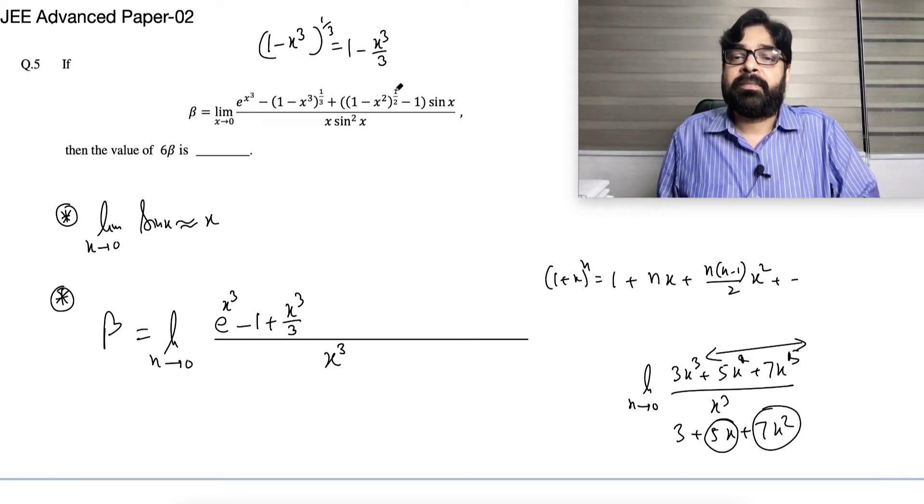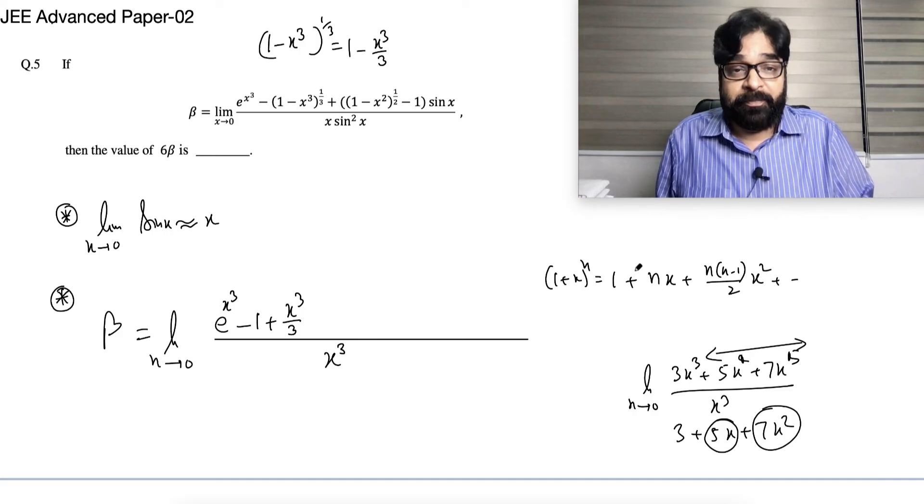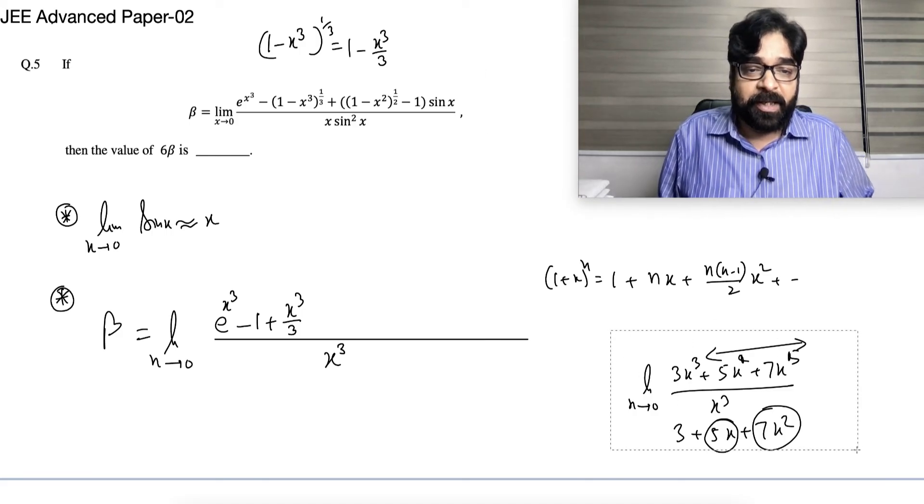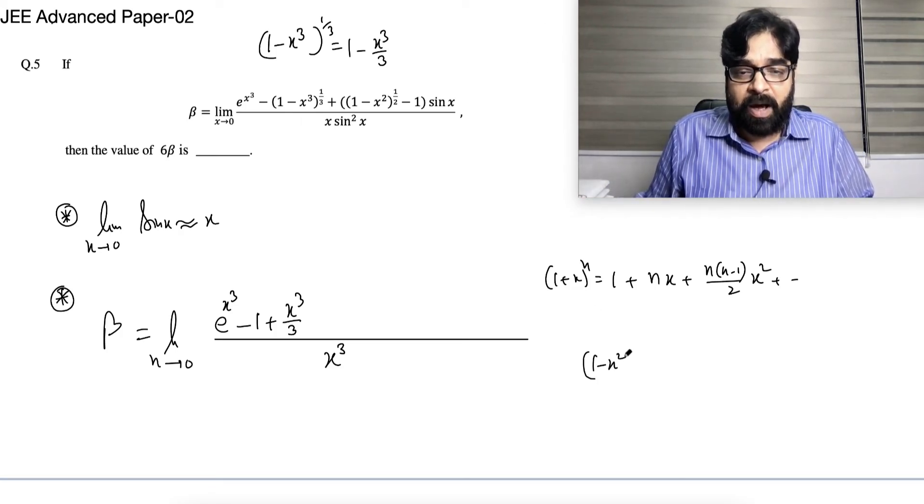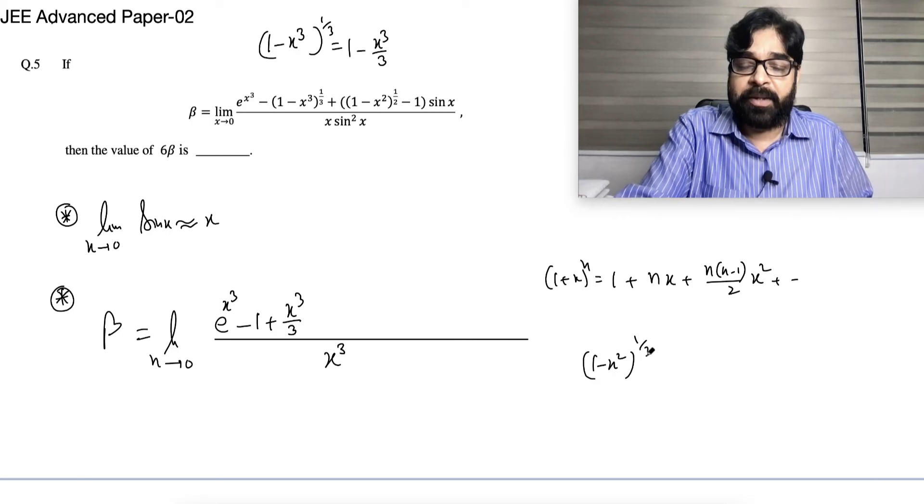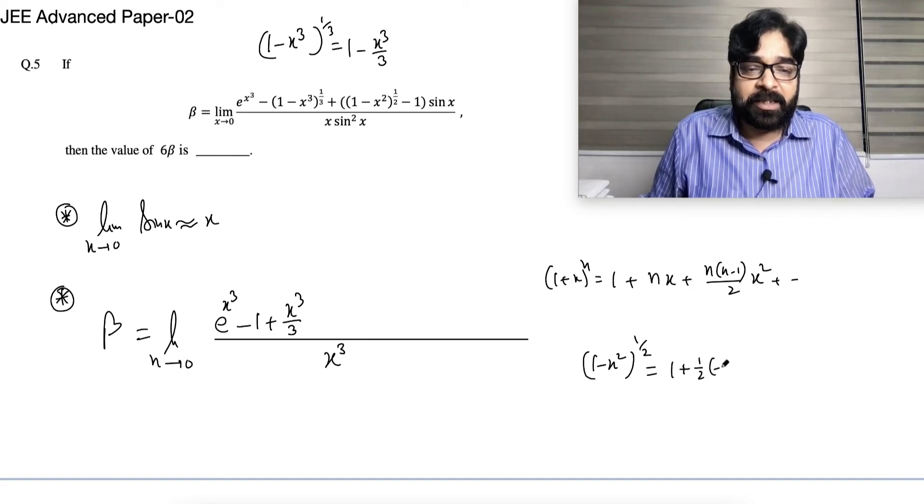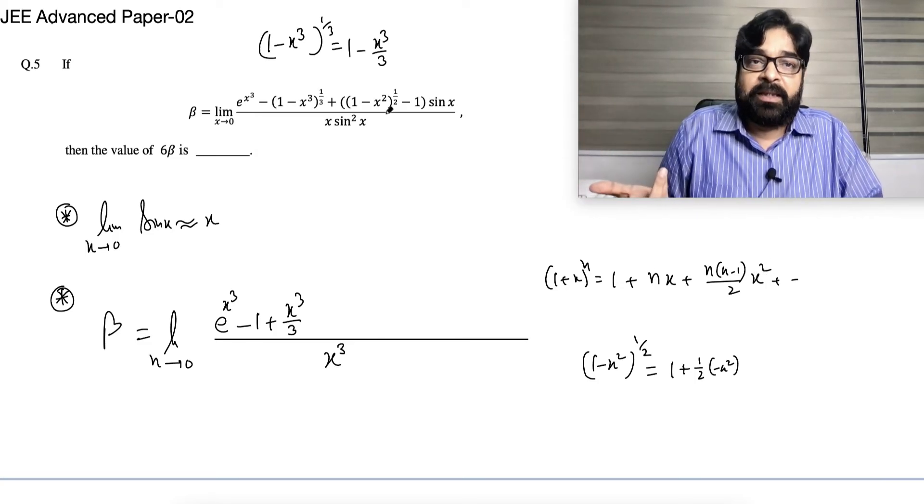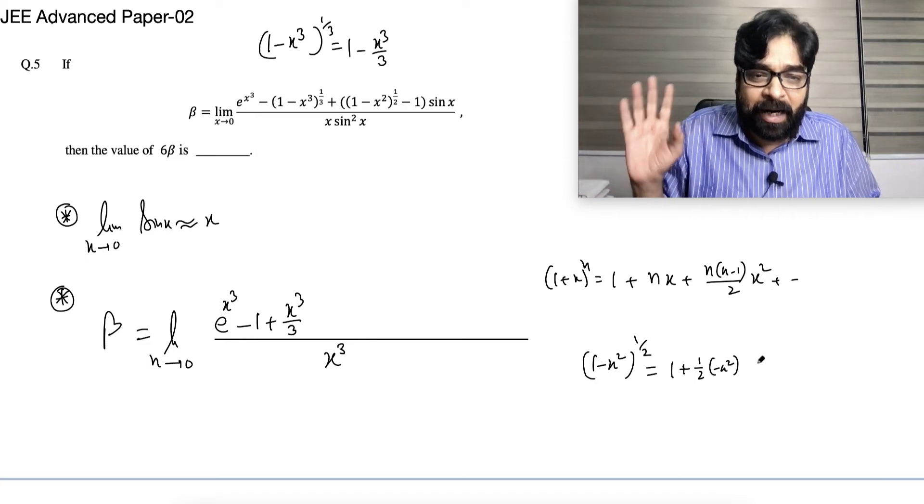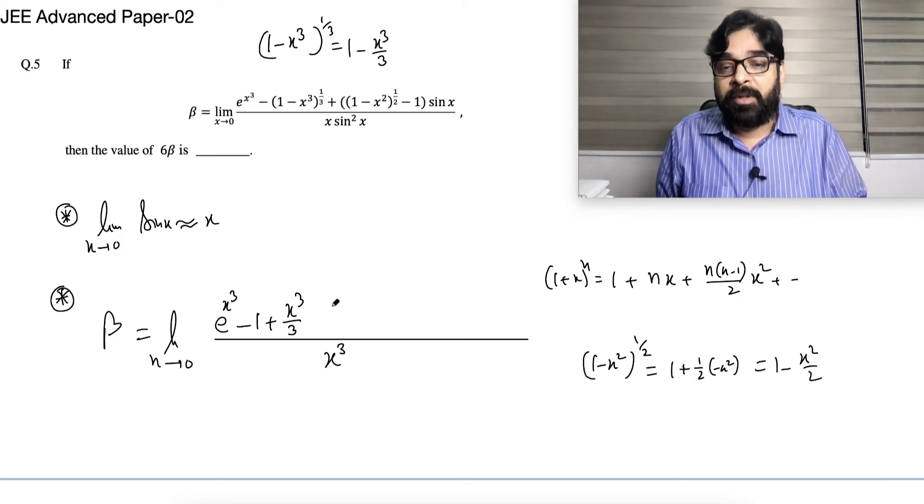Now, next thing, (1 - x²)^(1/2), what do you write? Everybody please, (1 - x²)^(1/2) will be equal to 1 + 1/2, in place of x minus x². And next term will come x² power square, so that is x power 4, I will not write, who will write unnecessary, 1 - x²/2?